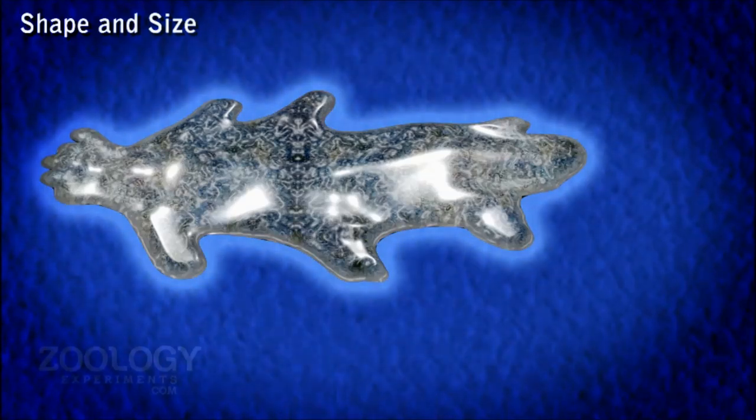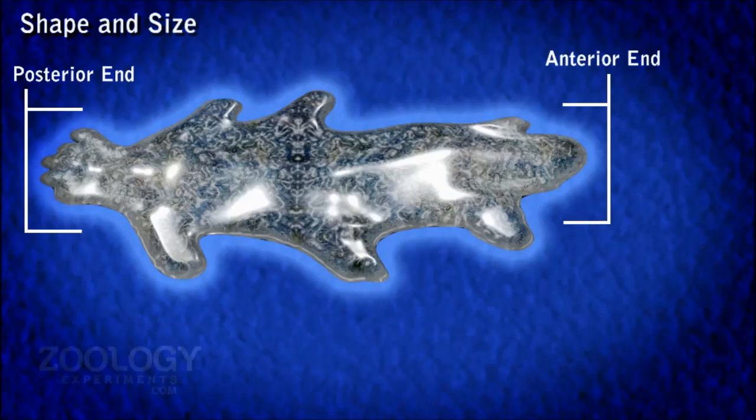Far from being shapeless, it has definite anterior and posterior ends. At the anterior end, the animal puts out pseudopodia, while the posterior end is marked by a wrinkled region called uroid.